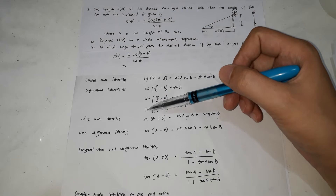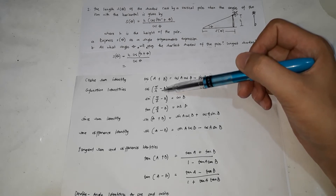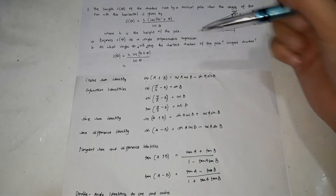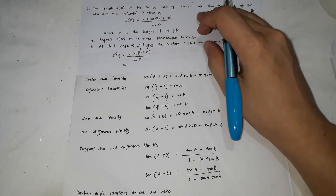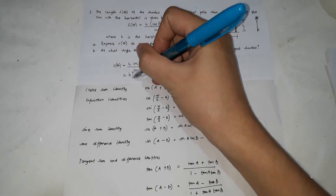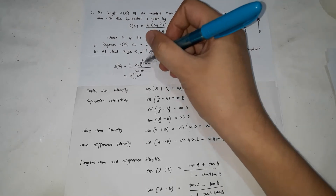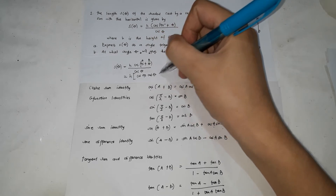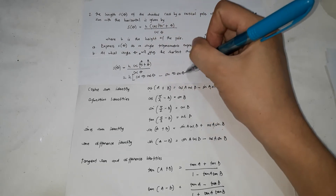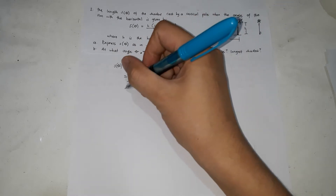We're going to use the cosine addition identity — not the minus version. Here, 90° becomes A and θ becomes B. Substituting: cos(90° + θ) = cos A·cos B − sin A·sin B = cos(90°)·cos(θ) − sin(90°)·sin(θ). So S(θ) = H · [cos(90°)·cos(θ) − sin(90°)·sin(θ)] / cos(θ).